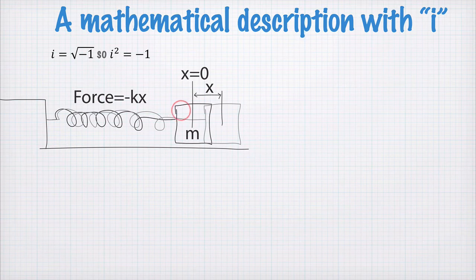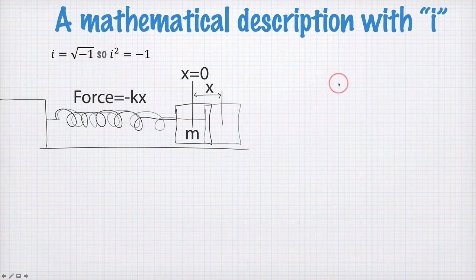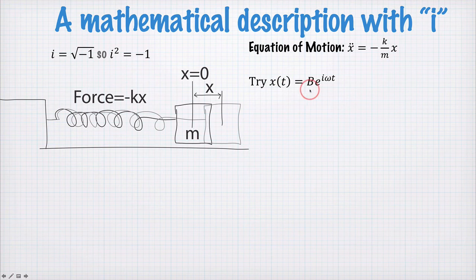Okay, so let's go through all this again for the last time. So here's our setup with the force, and due to the spring and the mass, i is the square root of minus one. This is our equation of motion, and this time our trial solution looks like this: x is equal to B e to the i omega t.